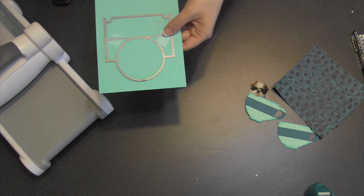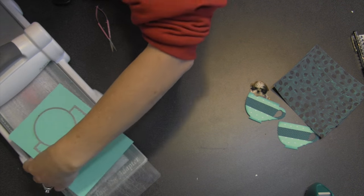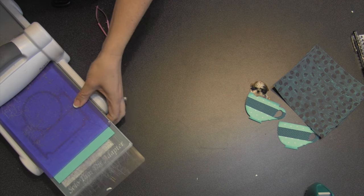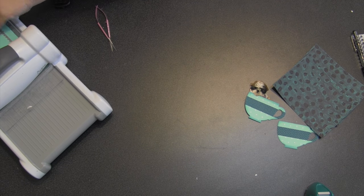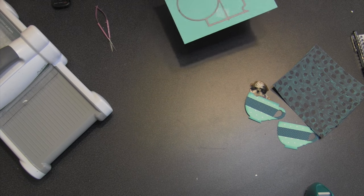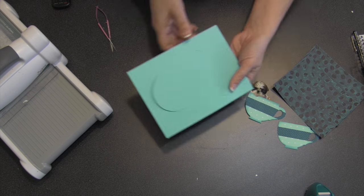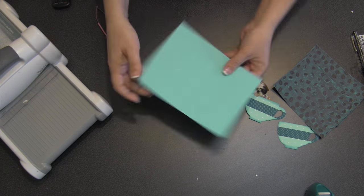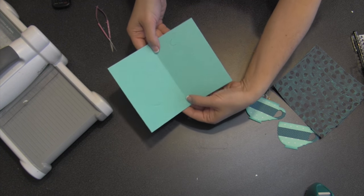I like to use a temporary removable tape to hold the die in place while I'm die cutting. Make a sandwich for your machine for a wafer-thin die and roll it through like usual. Then you can just take the die right off the piece and now it's ready for training.